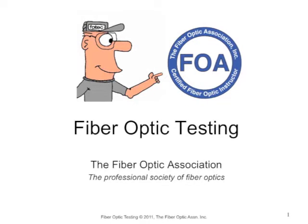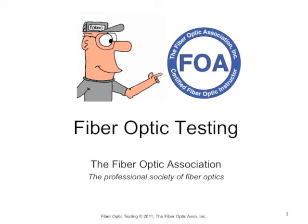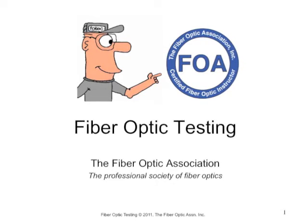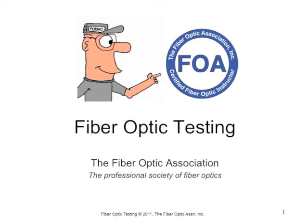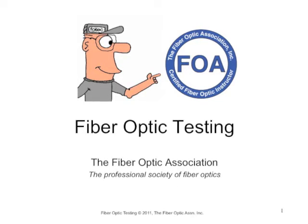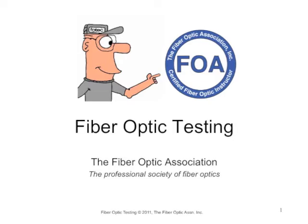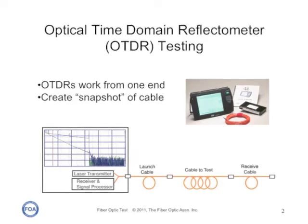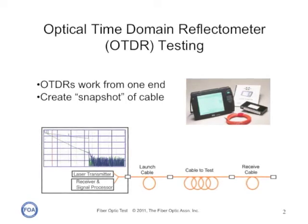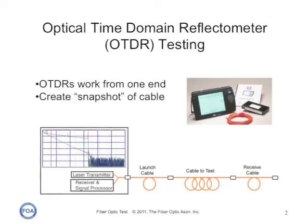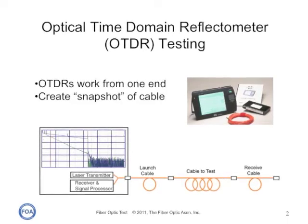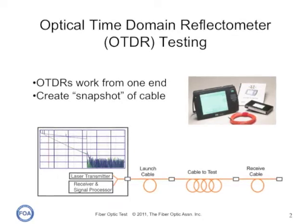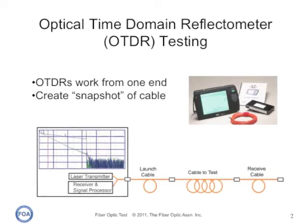This is lecture 17 in the FOA series on fiber optics. This lecture will be covering the basics of testing fiber optic networks with optical time domain reflectometers, OTDRs. OTDRs are an interesting piece of test equipment in that they only need access to one end of the cable to work, and what they do is they create a snapshot of the cable plant that can be analyzed for all sorts of useful and interesting information.